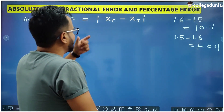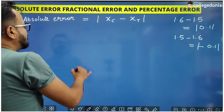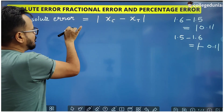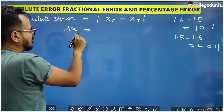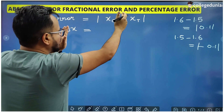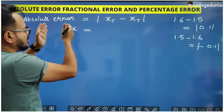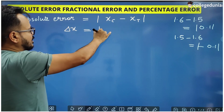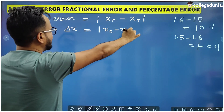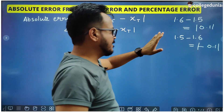We just have to put the modulus sign, which means we ignore the sign. This difference is called the absolute error in the quantity, represented by delta with the symbol of that quantity. Since we are finding the error in x, the symbol is delta x: delta x = |x_calculated − x_true|.